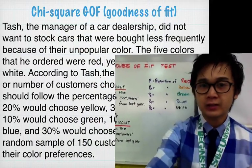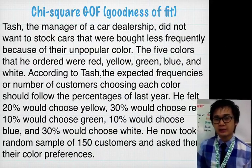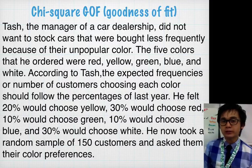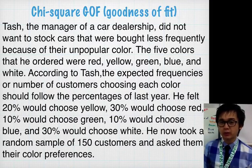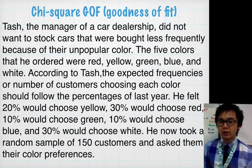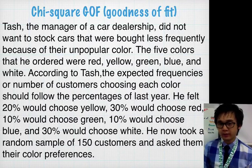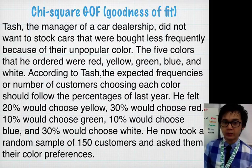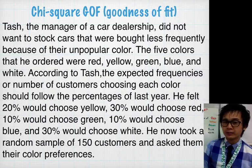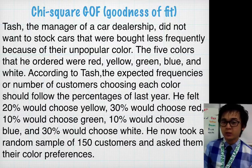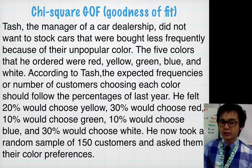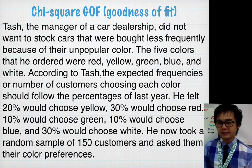Now for this chi-square goodness of fit test, Tash, who is the manager of a car dealership, did not want to stock cars that were bought less frequently because of their unpopular color. The five colors that he ordered were red, yellow, green, blue, and white. According to Tash,